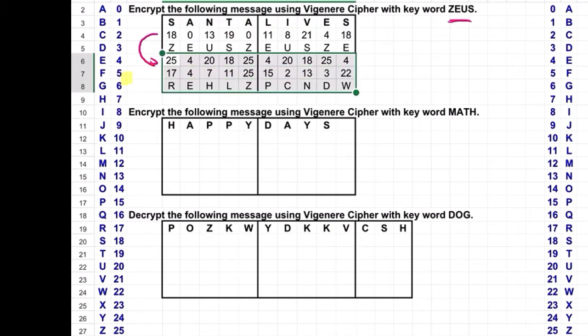So 18 plus 25 is 17 mod 26, and that converts to an R. 0 plus 4 is 4, which converts to an E. 13 plus 20 is 33, which reduces to 7 mod 26, so we get H, and so on down the way.